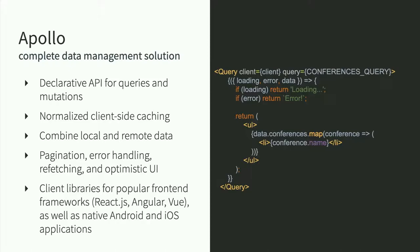There are more complex client libraries. The most popular is called Apollo — a complete data management solution on the client side. This implementation is for JavaScript and React specifically, but they have implementations for other front-end libraries and native applications. Apollo takes advantage of all the features unlocked by a GraphQL API: normalized data for client-side caching, the ability to combine remote and local data, pagination, error handling, refetching — things that when handled with a solid client library can unlock a lot of possibilities that other APIs don't provide out of the box.